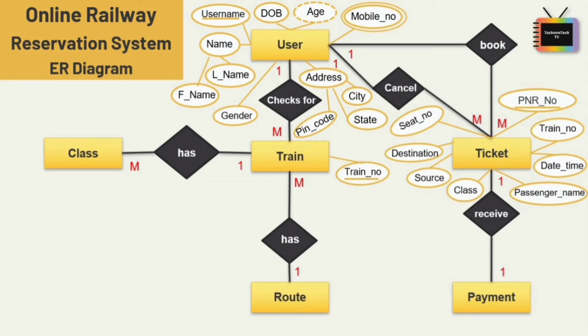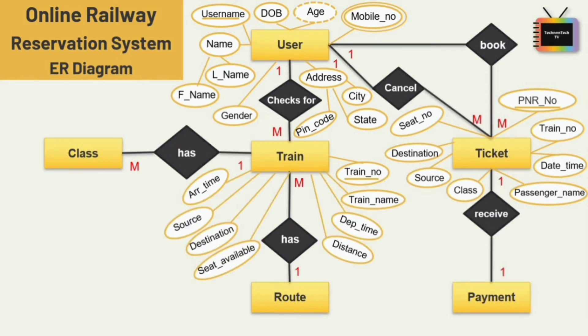The last attribute for user is gender. For the train entity, train number is the key attribute, and there are six simple attributes: train name, departure time, arrival time, source, destination, seat availability, and distance. For the class entity, there are three attributes: train number, fare, and class type, with train number as the primary key.